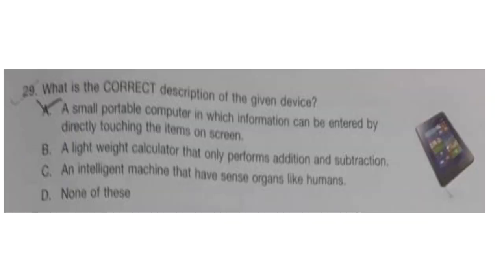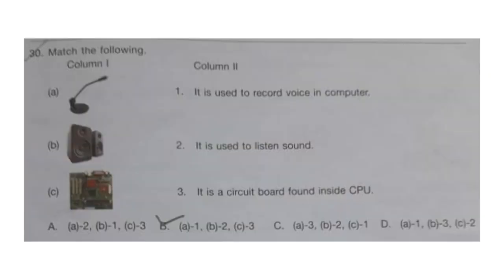Question 29: What is the correct description of the given device? The answer is option A — a small portable computer in which information can be entered by directly touching the items on screen. Question 30: Match the following. Column 1 has pictures and Column 2 has descriptions. The correct answer is option B — A1: a mic is used to record voice in a computer; A2: speakers are used to listen to sound; A3: it is a circuit board found inside the CPU.